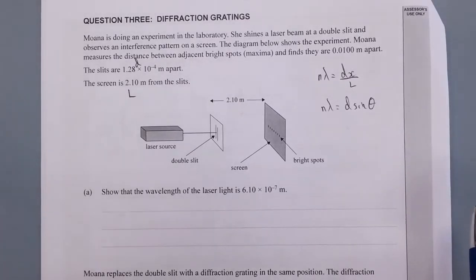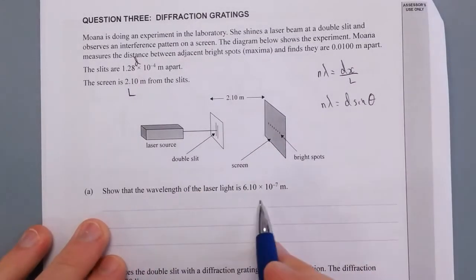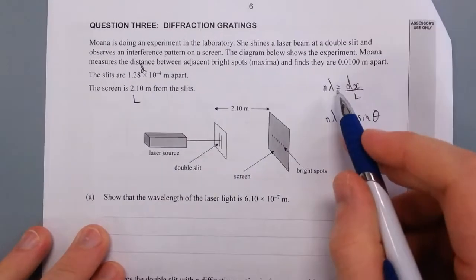Well, red lasers are usually 650, 632, but whatever. Some of them are 610. Right, so we don't have an angle whatsoever, so we're probably just going to have to use this formula here: nλ = dx/L.